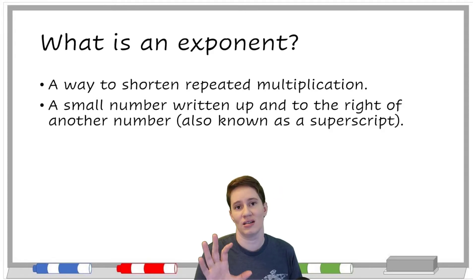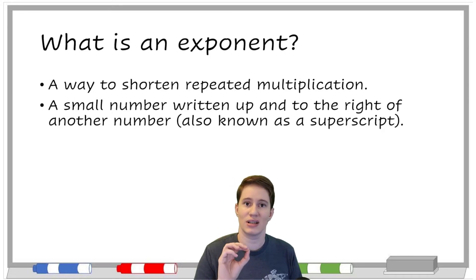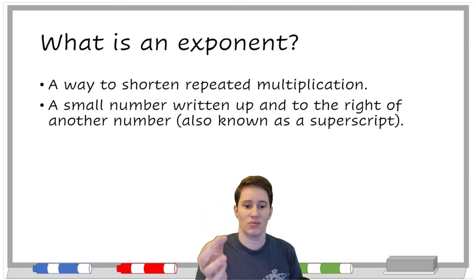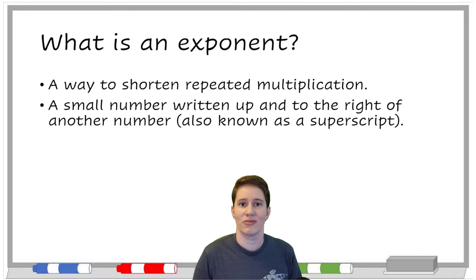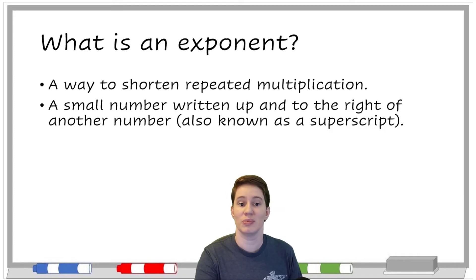So if you had Microsoft Word or some other processing software up, there's a way to type a superscript like we would with exponents. So that's a fun word as well — superscript. But it's up and to the right, and it tells us how many times we're supposed to be repeating our multiplication.